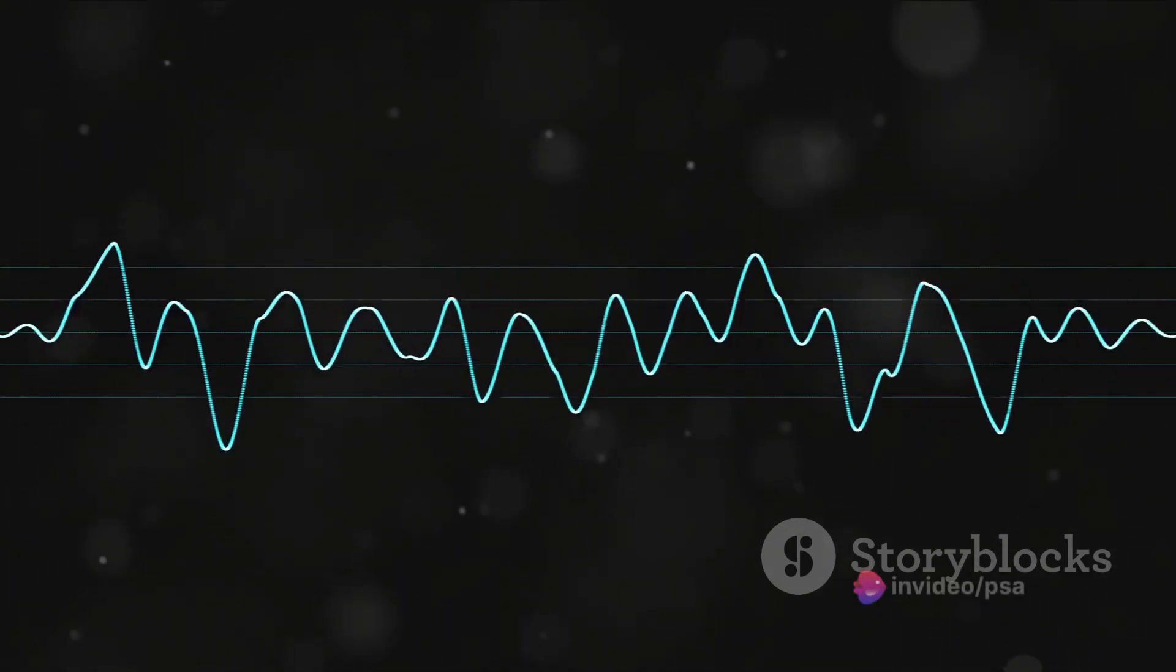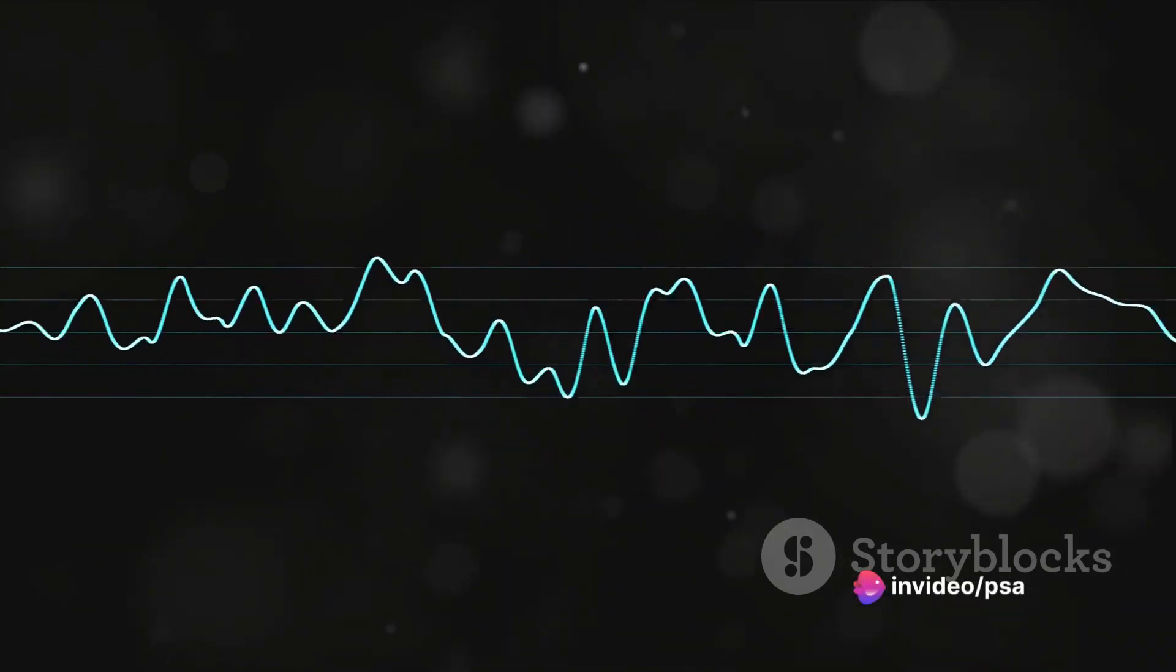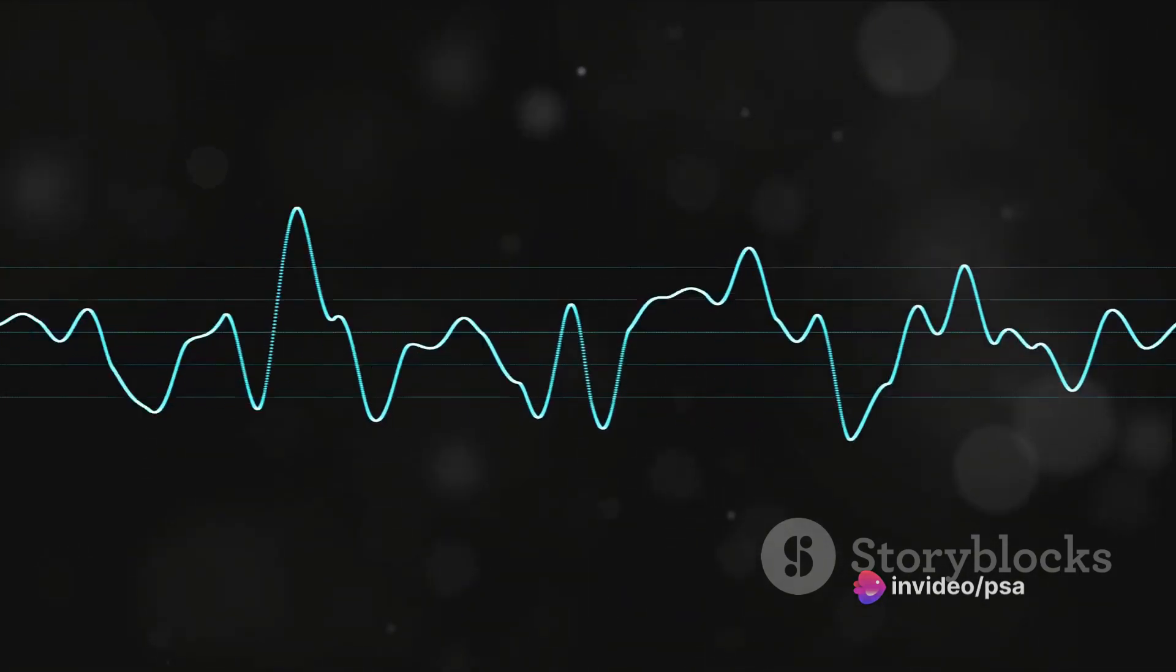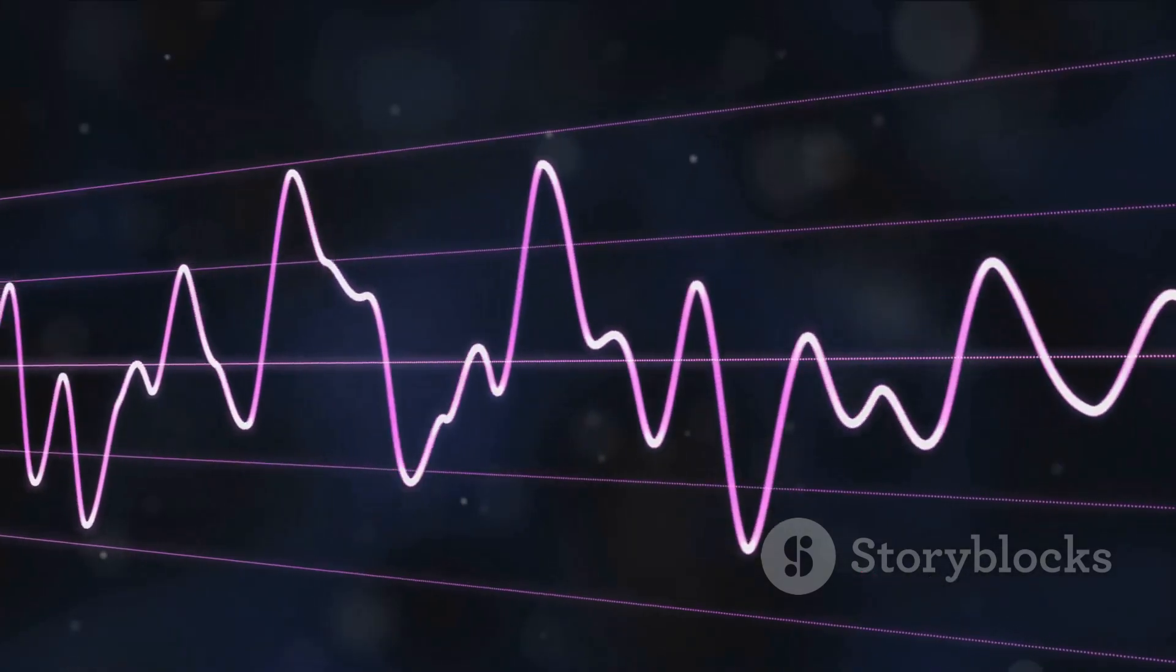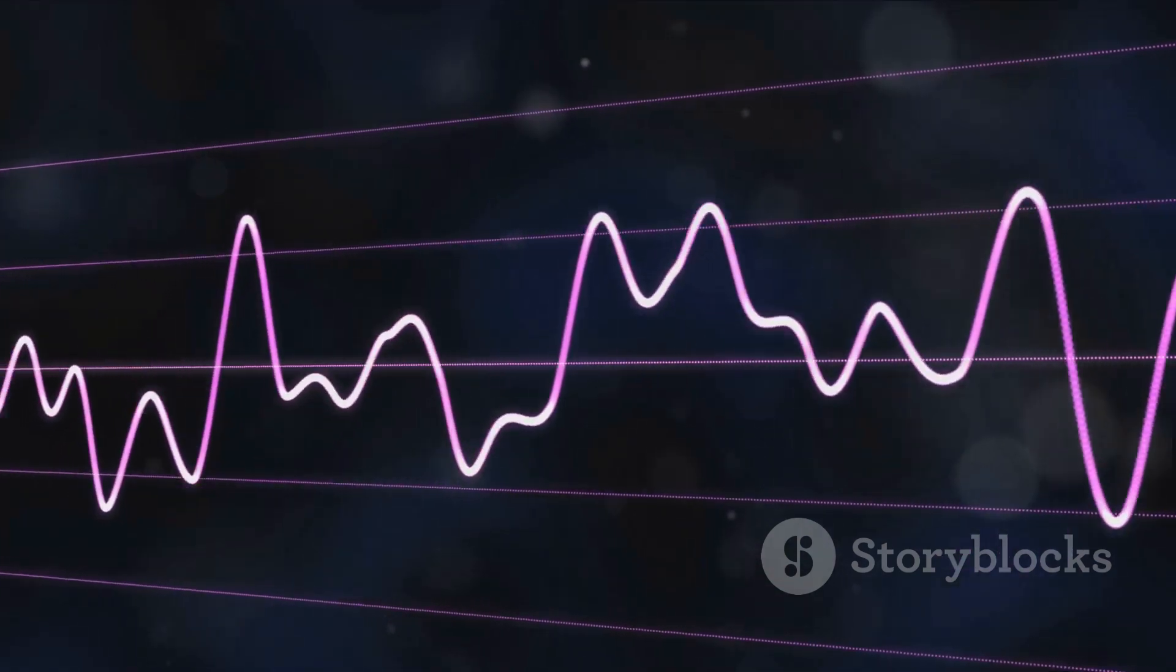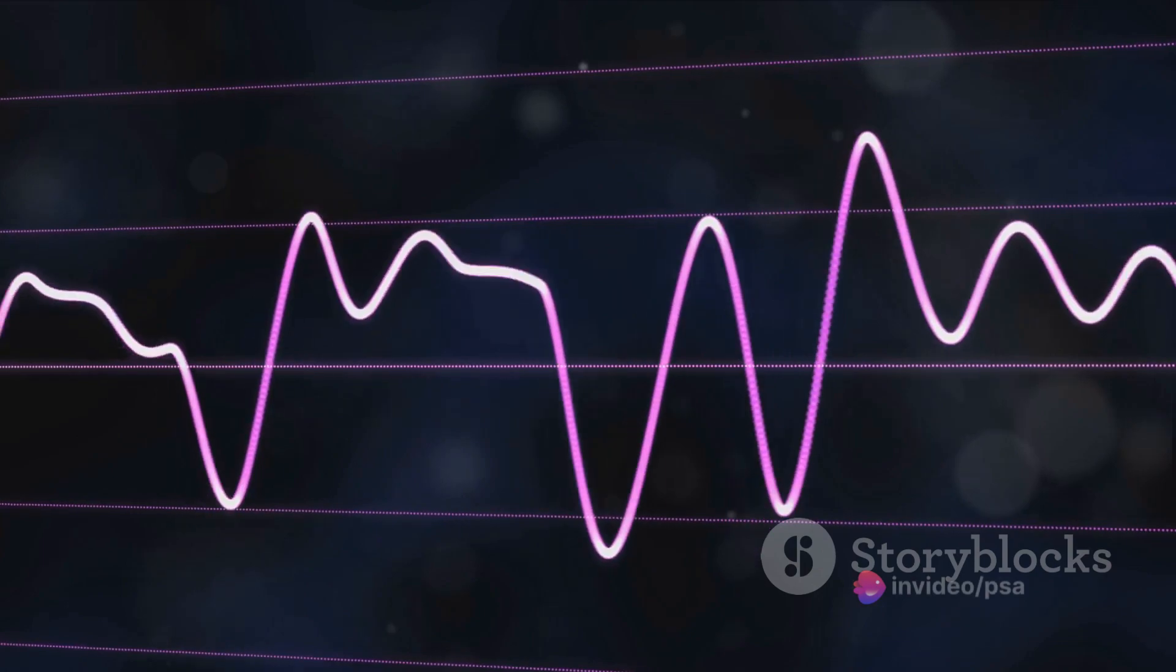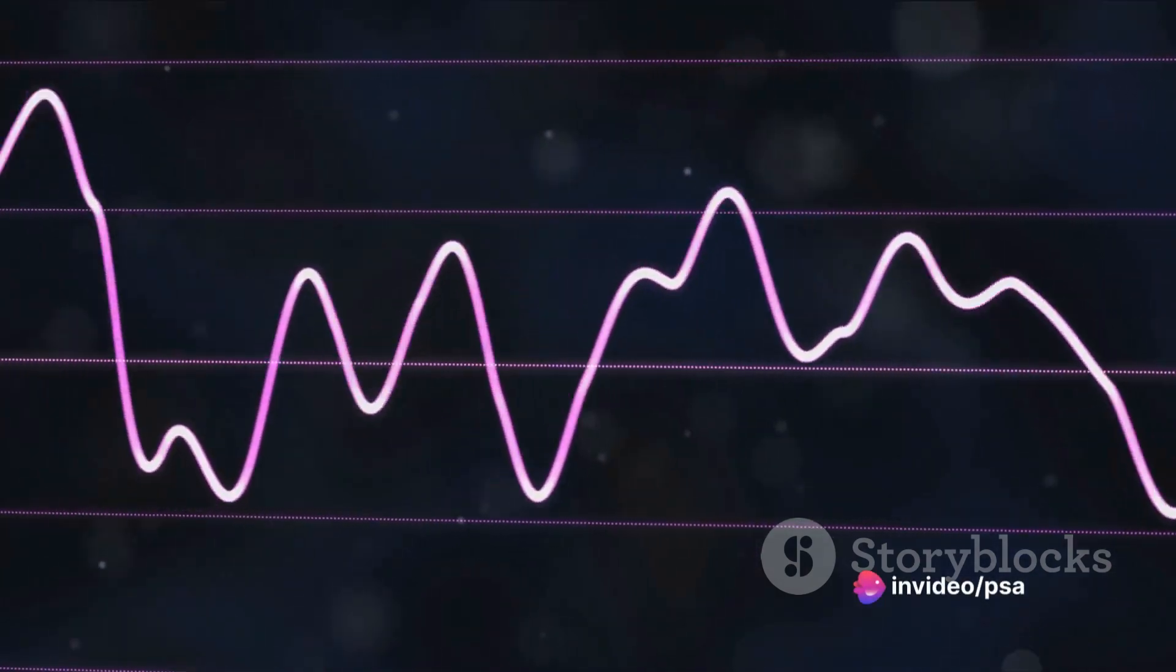The sine function, for instance, represents the vertical position of our rotating line. As the angle increases, the height of our line above the horizontal axis increases, reaches a peak, and then decreases back down. This is mirrored on the other side of the axis, creating a recurring wave-like pattern or cycle.